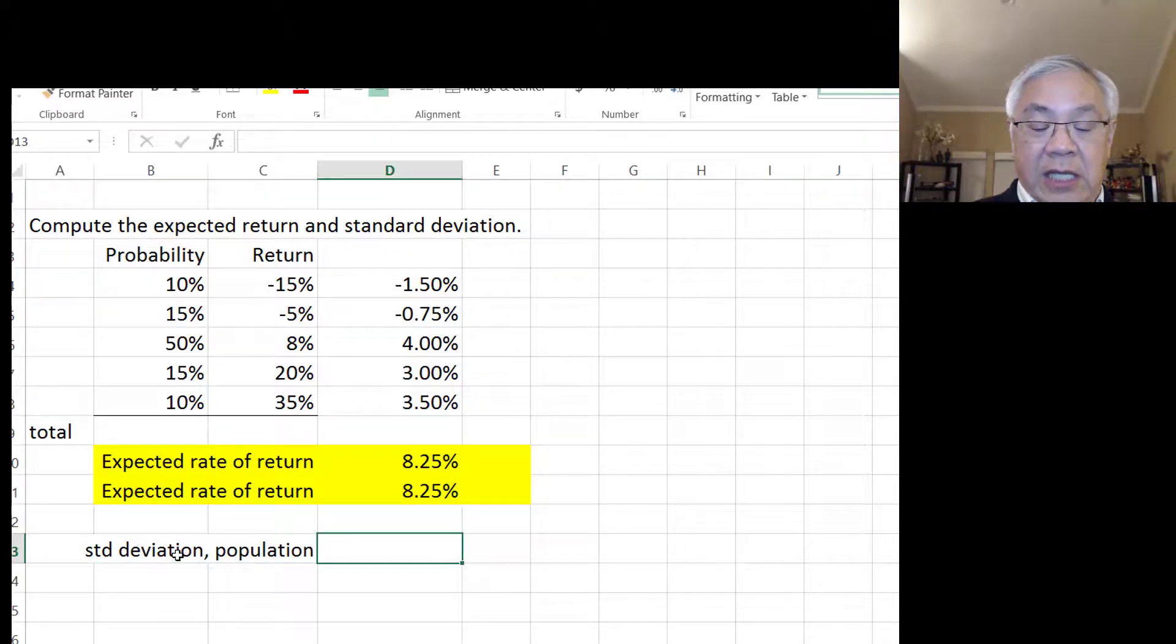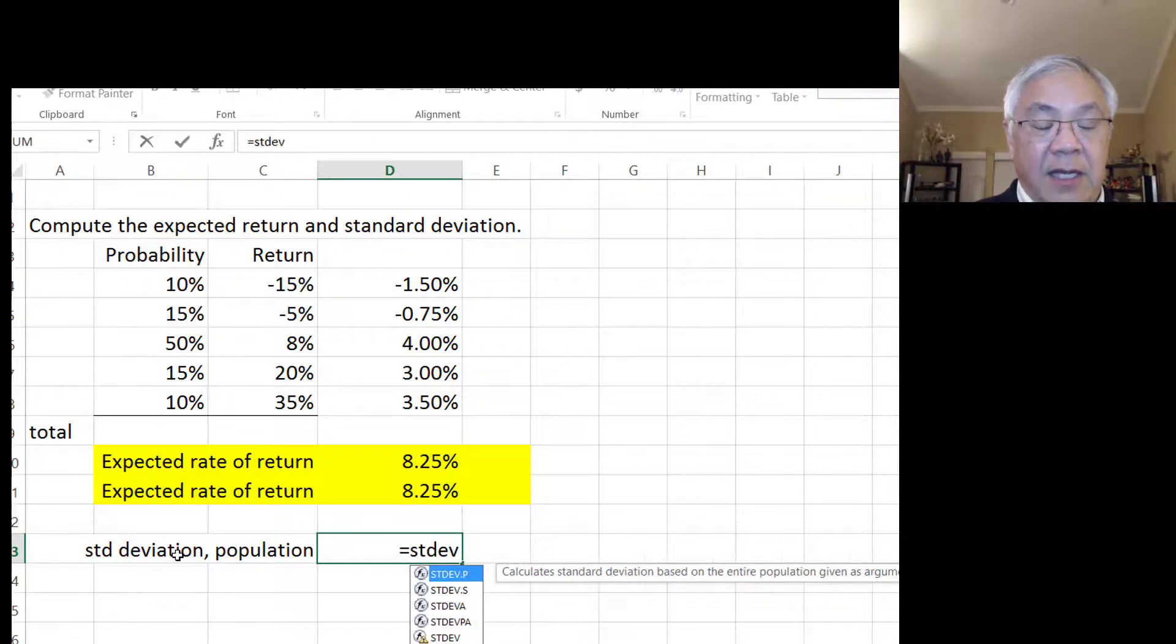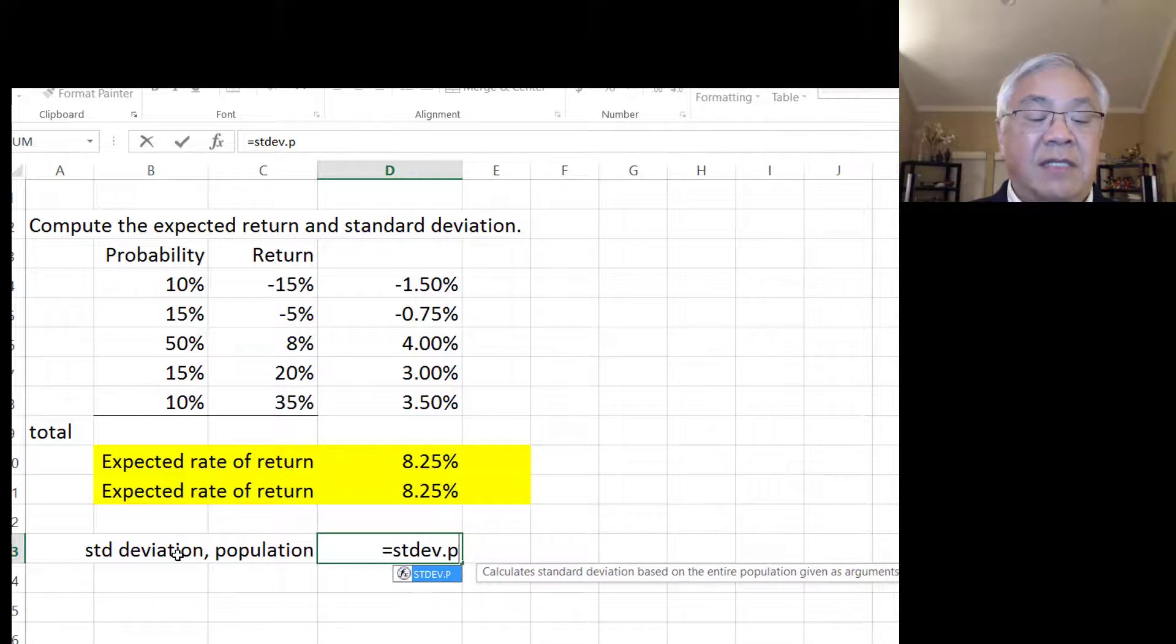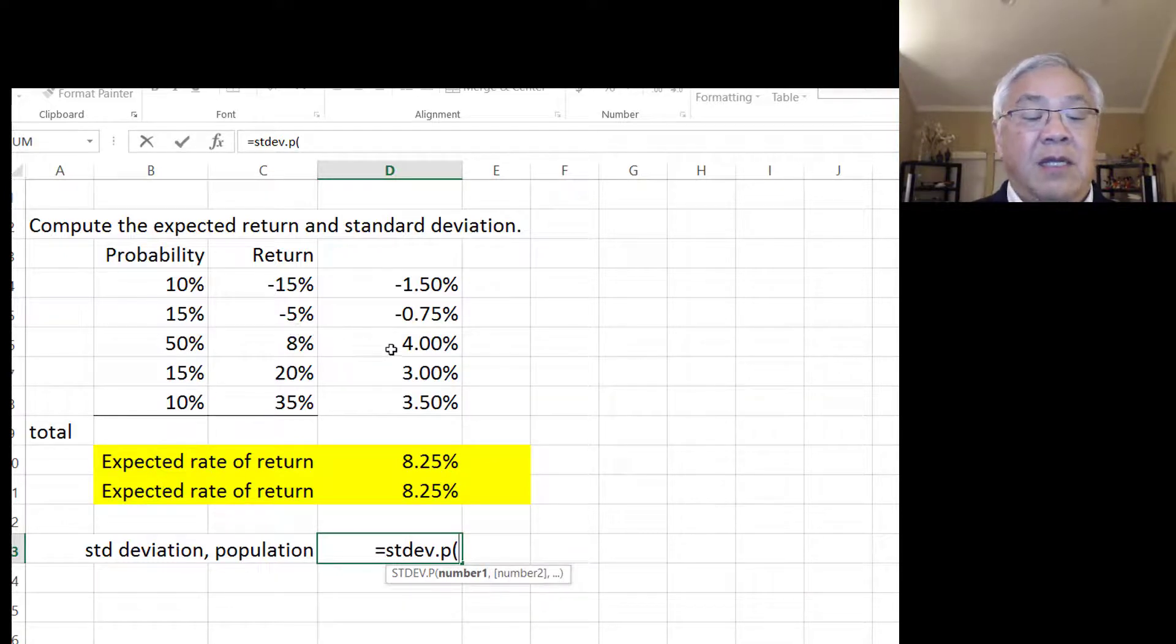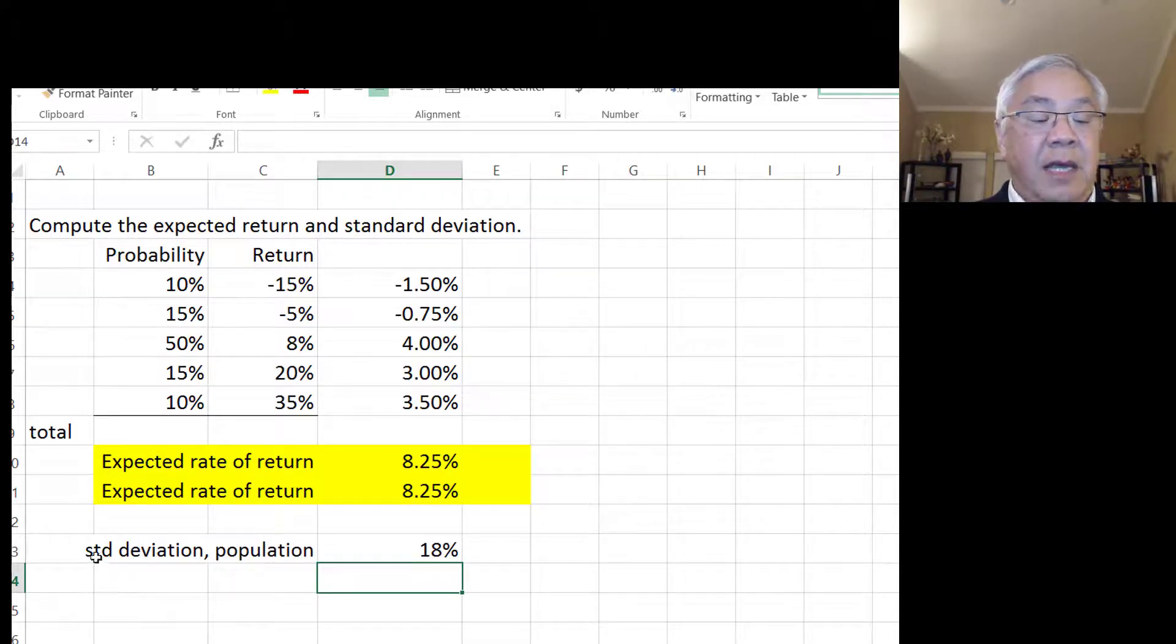...we would use equals STDEV, and you'll notice that it prompts you that there's a .P or .S. So .P is if we have the entire population, open parens, and then we would put the numbers that represent the returns, and the standard deviation here would be 18%. And it's a very small difference. I'll show you now.